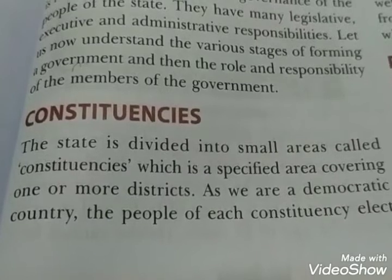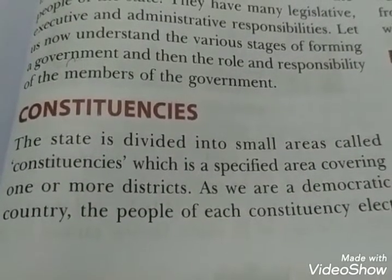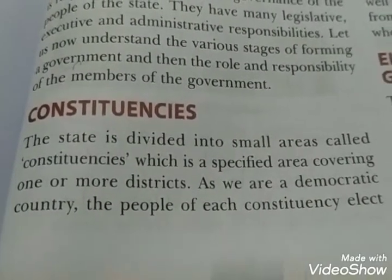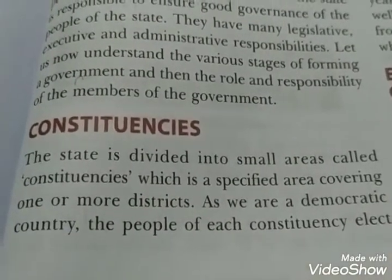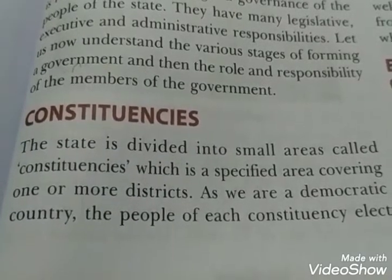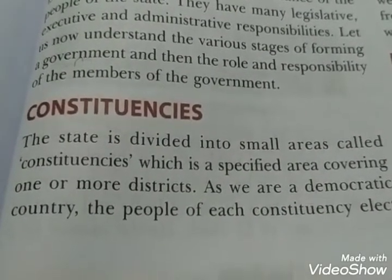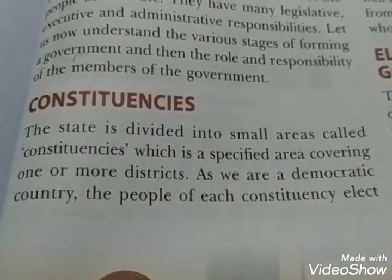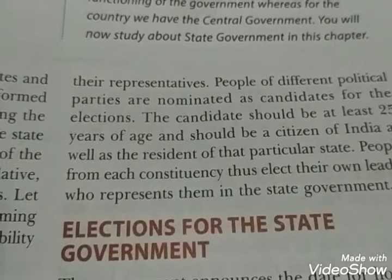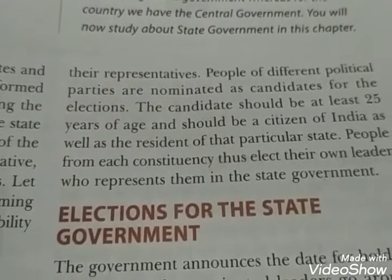Constituency means the area from which we elect members, or MLAs. A constituency is a specific area covering one or more districts. In a democratic country, the people of each constituency elect their representative. People of different political parties are nominated as candidates for the election. The candidate should be at least 25 years of age, a citizen of India, and a resident of that particular area.